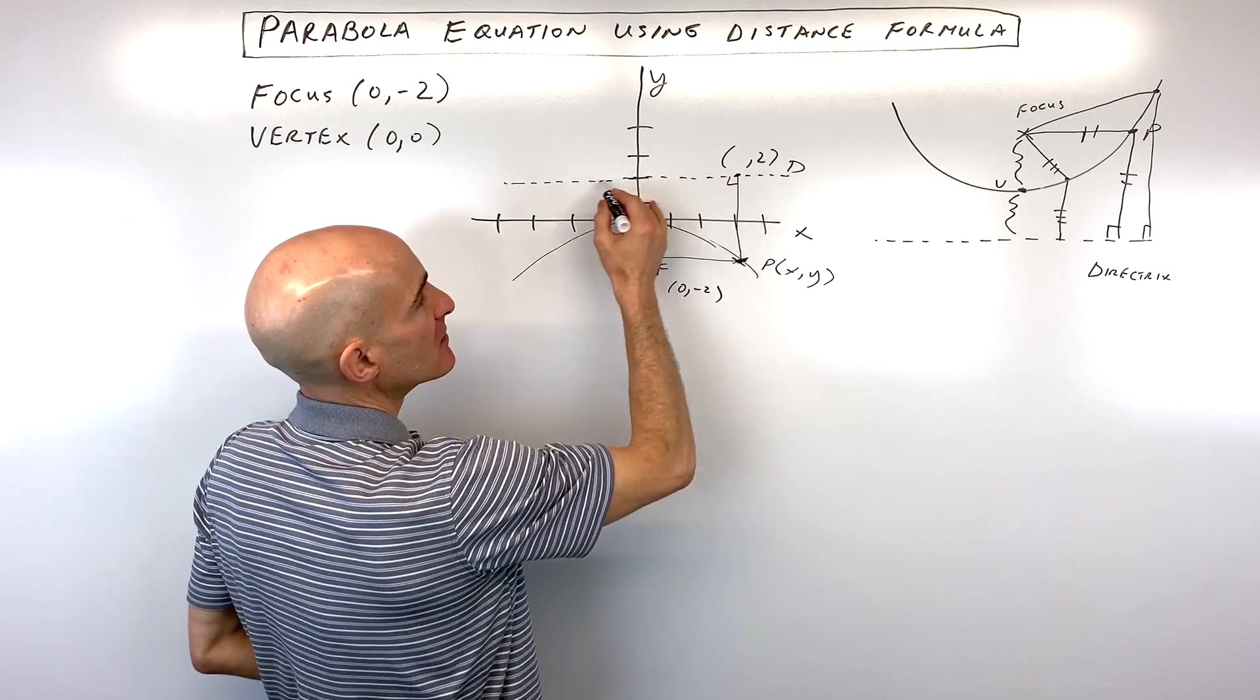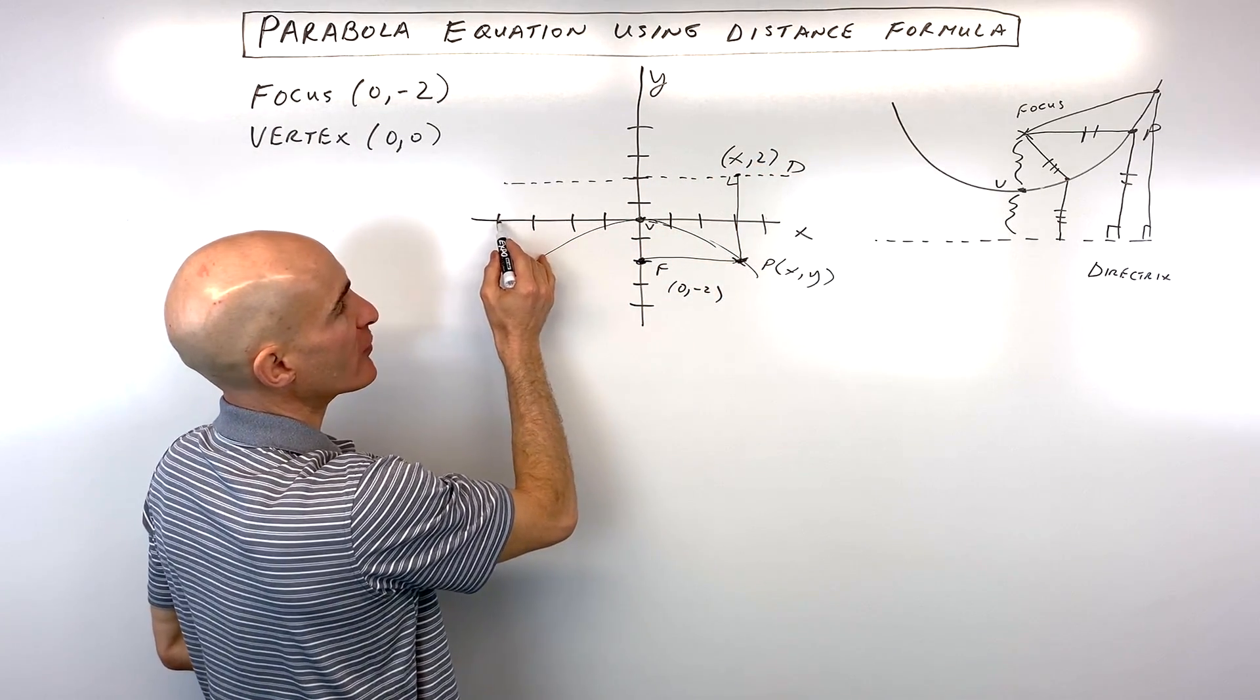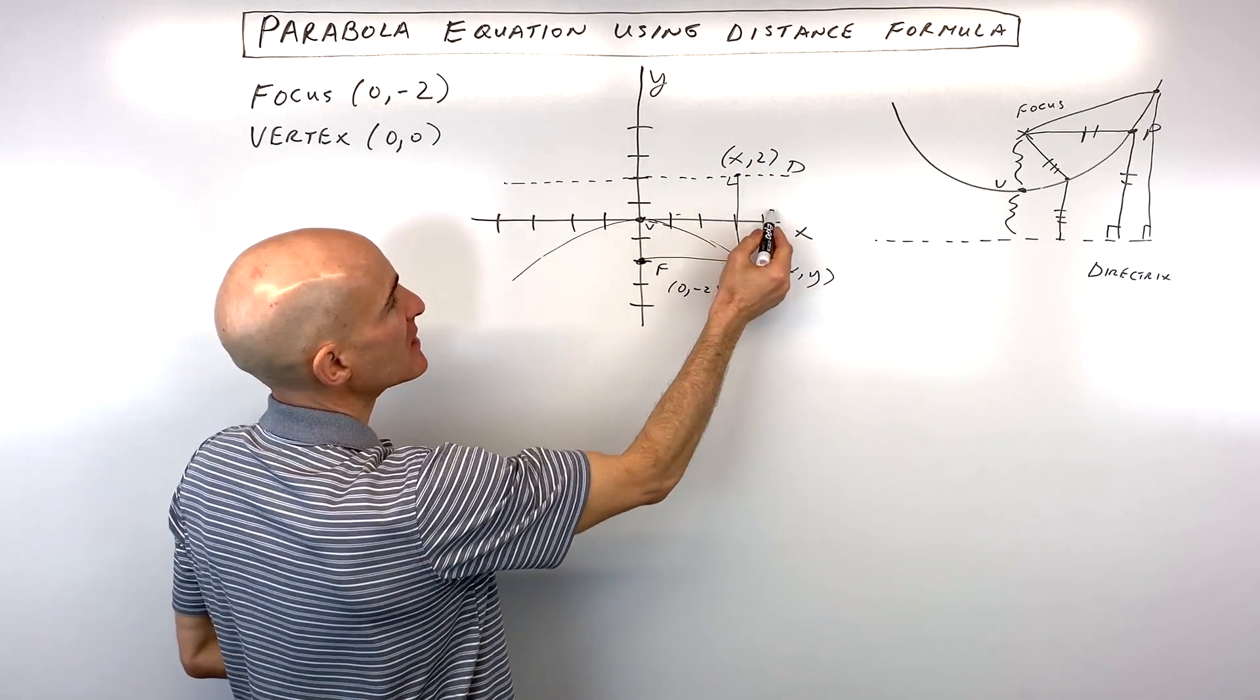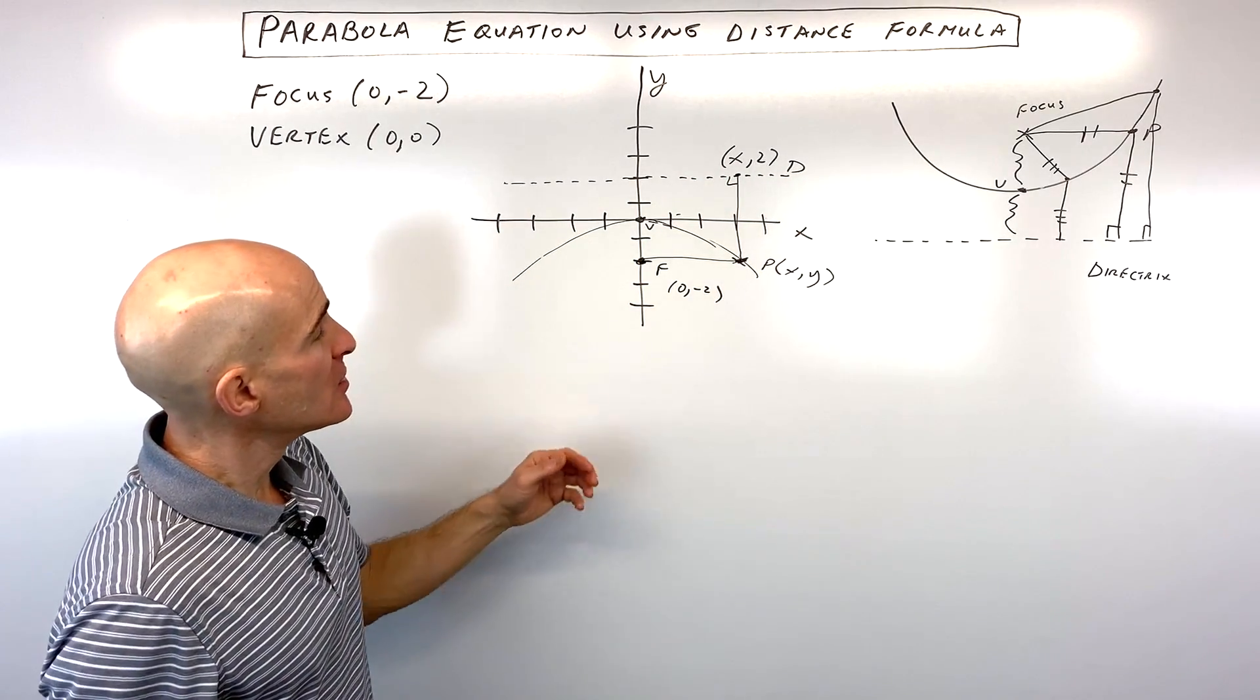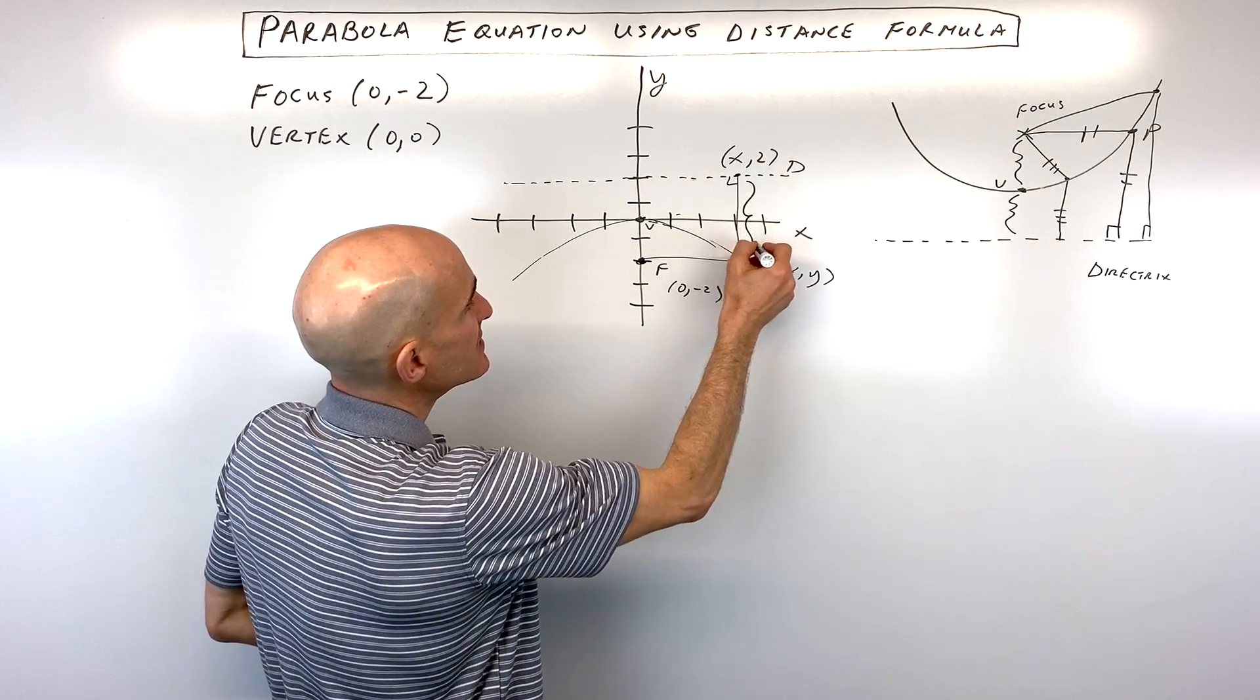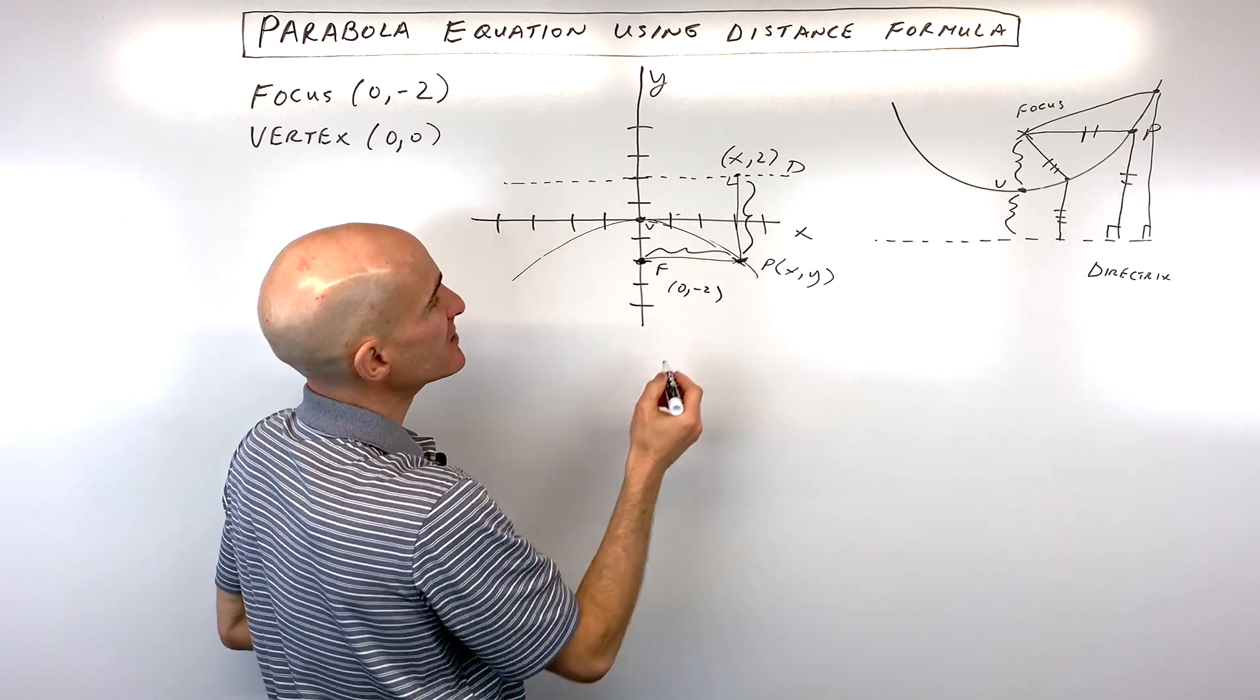So that means that this point right here is always going to be a y-coordinate of 2. Now the x-coordinate could be anything, so I'm just going to call that x. You could be going way over here, (-4, 2) or (4, 2). We don't know what the x value, but the y value is always 2. So now what we're going to do is we're going to set this distance equal to this distance.